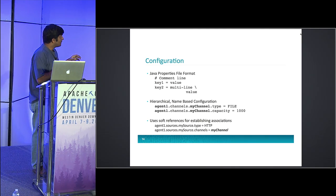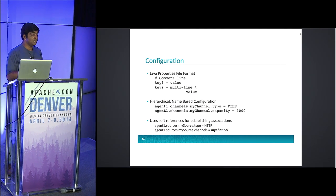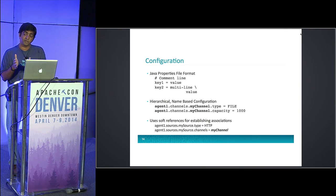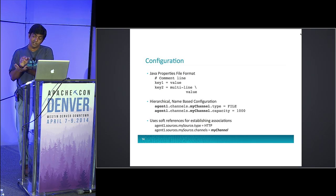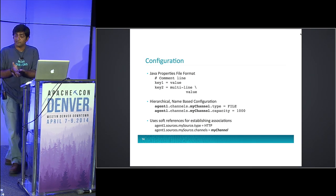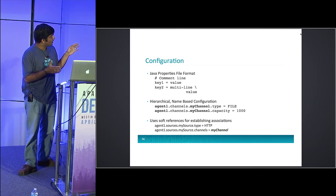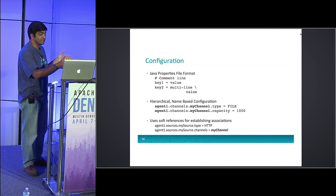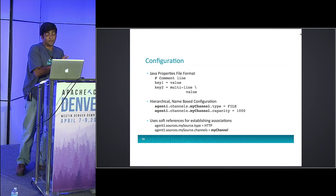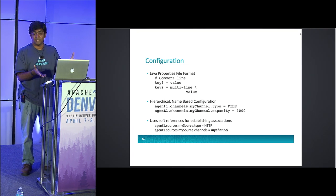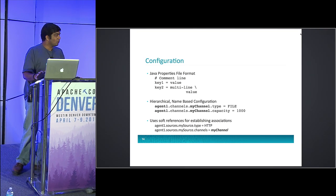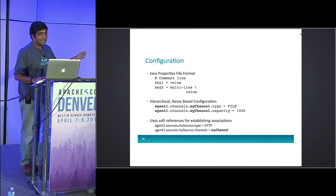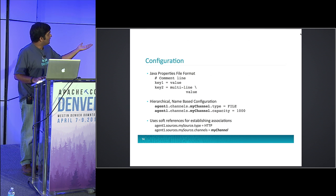The last part of the whole configuration path gets passed down to your individual component; the parts before that are for the Flume agent to understand who to pass that configuration to. Each parameter gets broken down into subcontext and subcontext and eventually passed down to each component. Sometimes components go further to have configuration for subcomponents within the component — like a serializer for the HDFS sink. You could make it as hierarchical as you want based on the component you're using.